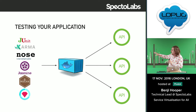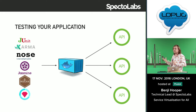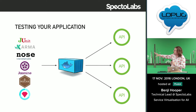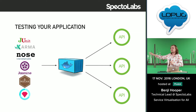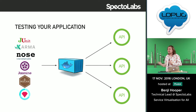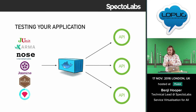Looking at this diagram, we've got some kind of generic testing framework on the left, and our application in a Docker container. The important bit is that it's talking to three different APIs. These APIs could be external — for example, the Google Maps API — or they could be internal APIs used in your microservice architecture.